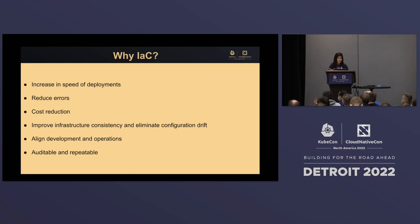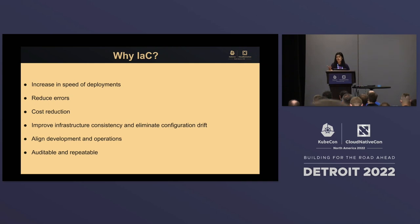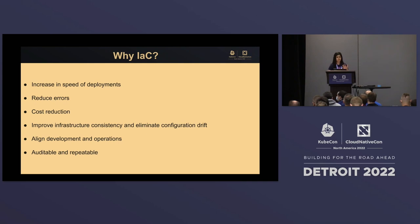With IAC, your engineers don't have to do the process manually. IAC does the heavy lifting — right sizing infrastructure, managing, provisioning — everything in an automated fashion. This reduces time to production tremendously and increases the speed of deployment. When doing things manually there are human errors — typos, clicking in the wrong region. IAC cancels out those errors, provides cost reduction, and eliminates consistency drift between dev and production.